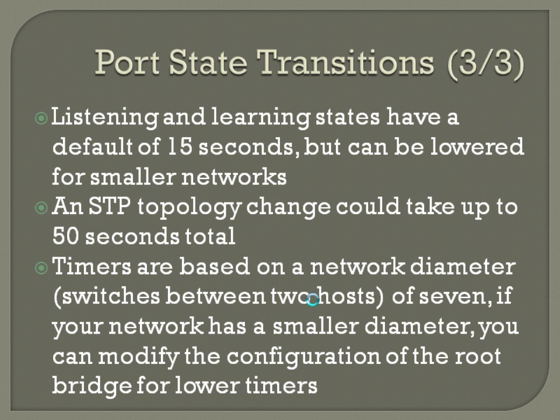Potentially you could be down for 50 seconds total, which in networking time can seem like an eternity. Timers are based on network diameter — the number of switches between two hosts — defaulting to seven. If your network has a smaller diameter you can modify the root bridge configuration. The diameter is basically the distance between the two switches furthest from each other. Once we get into rapid spanning tree, you won't really have to worry about tweaking this because things come into play that considerably reduce those timers.